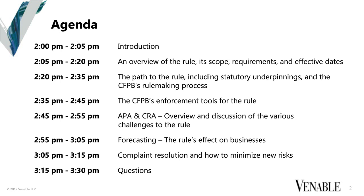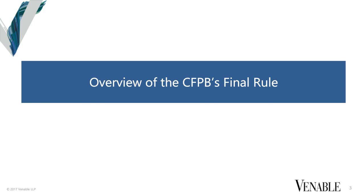And my colleague Peter Frechette, who is Venable's in-house expert on the arbitration rulemaking itself and knows pretty much every detail of the rule and the report that preceded it. I'm Allison Baker, and I'm fortunate to be the moderator for this great panel. So let's get started. Today we're going to start by asking Peter to give us an overview of what the final rulemaking says, how it's different from what was initially proposed, and also some of the reporting required under Section 1028 of the Dodd-Frank Act that preceded the rulemaking, because in the context of this particular rule, that's really mission critical.